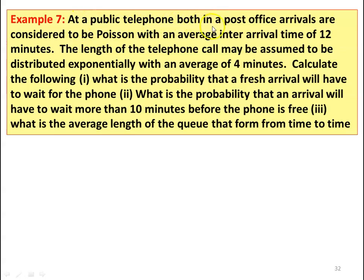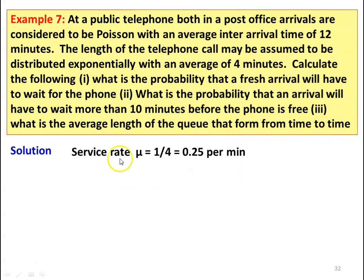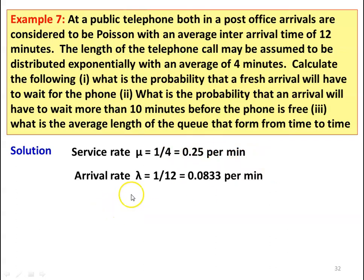Example number 7. At a public telephone booth in a post office, arrivals are considered Poisson with an average inter-arrival time of 12 minutes. The length of the telephone call is assumed to be distributed exponentially with an average of 4 minutes. Calculate the following: 1. What is the probability that a fresh arrival will have to wait for the phone? 2. What is the probability that an arrival will have to wait more than 10 minutes before the phone is free? 3. What is the average length of the queue that forms from time to time? Service rate mu equals 1 divided by 4 equals 0.25 per minute. Arrival rate lambda equals 1 divided by 12 equals 0.0833 per minute.